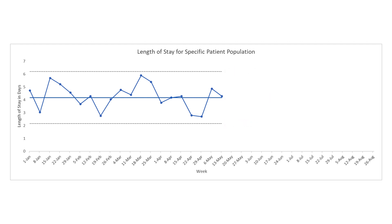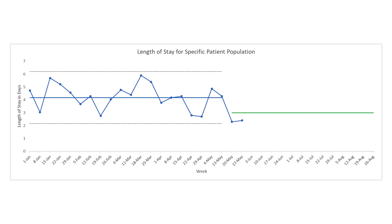We're now starting an improvement project with the target to reduce average length of stay to three days. After two weeks, both had an average length of stay of around two days. It will be tempting to say you have seen improvement and want to add a new mean — don't do it, there's not enough evidence. The third week you had a length of stay of 6.3 days. Should we go react to it? Yes — something abnormal occurred here, what we call an outlier. One of your improvement ideas may have made things worse.